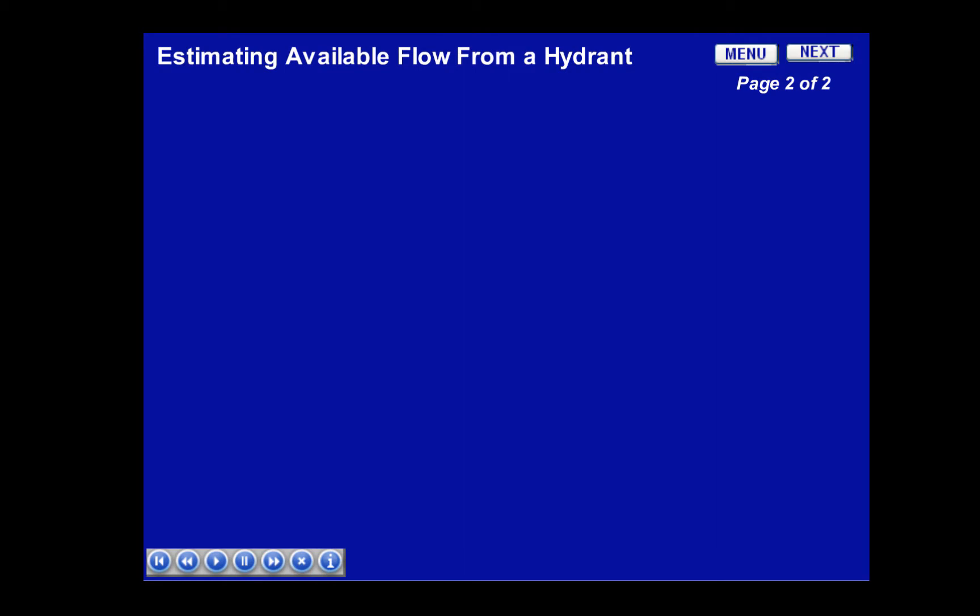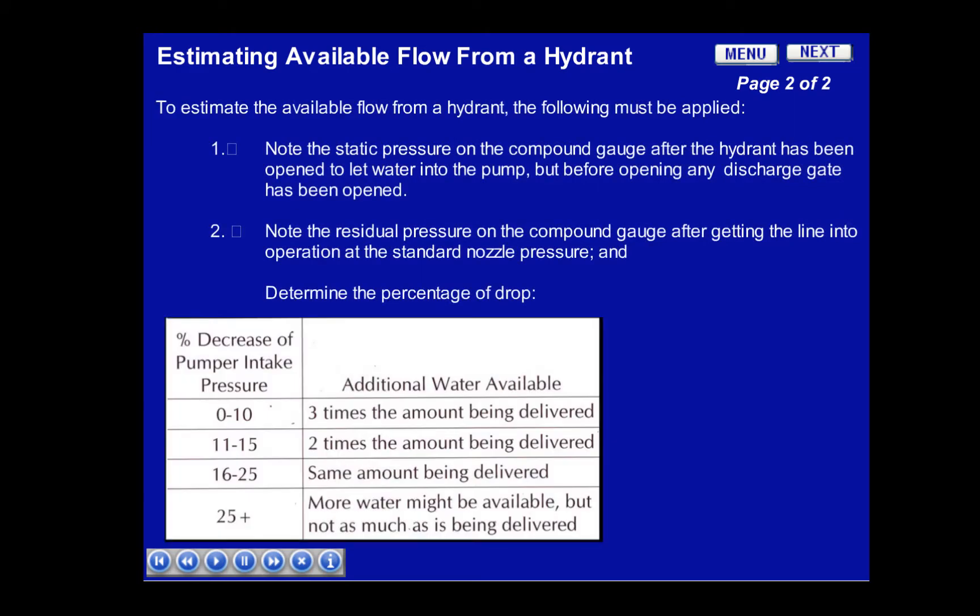To estimate the available flow from a hydrant, the following must be applied. Note the static pressure on the compound gauge after the hydrant has been opened to let the water into the pump, but before any discharge gate has been opened. Then note the residual pressure on the compound gauge after getting the line into operation at the standard nozzle pressure, and this determines the percentage of the drop.